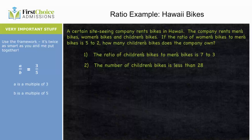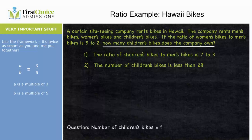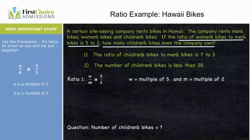Let's look at how these ratios work in an actual number properties question. A certain sightseeing company rents bikes in Hawaii — men's bikes, women's bikes, and children's bikes. The ratio of women's bikes to men's bikes is 5 to 2. How many children's bikes does the company own? We need the actual number of children's bikes. From the question: w over m equals 5 over 2, so w is a multiple of 5 and m is a multiple of 2.